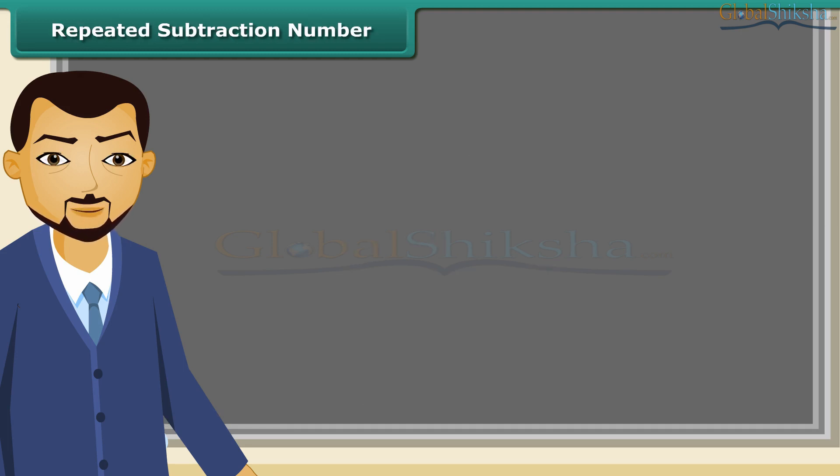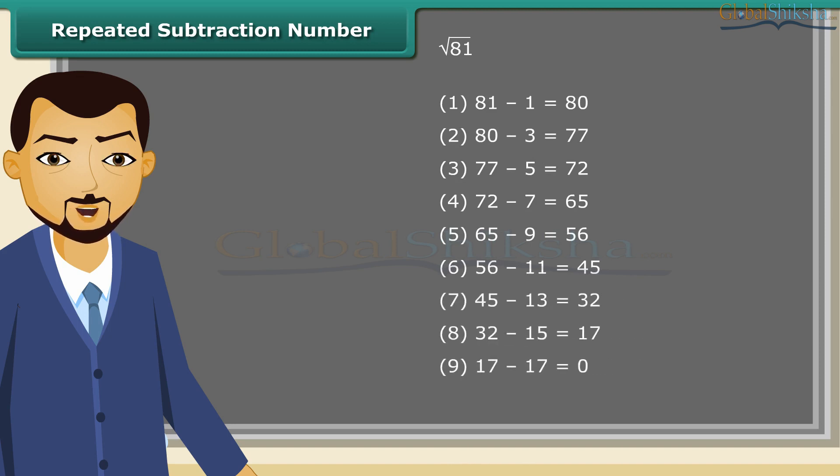We can find the square root of a given number using repeated subtraction method. It is really easy. Consider the square root of 81. Just subtract successive odd numbers from 81 starting from 1 till the difference becomes 0. So, you have noticed it took 9 steps to get the difference as 0. Therefore, the square root of 81 is 9.